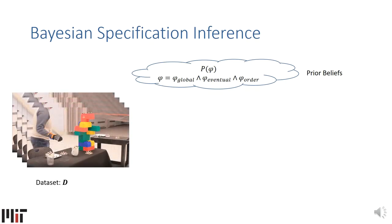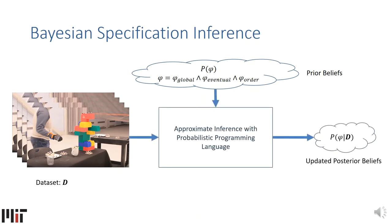The demonstrations provided by the expert form the observed dataset D, and we perform inference on this model using a Turing-complete probabilistic programming language to compute the posterior belief over task specifications conditioned on the demonstrations.